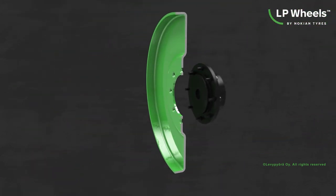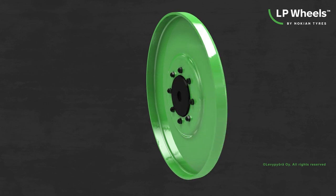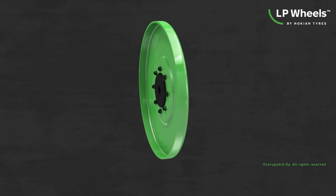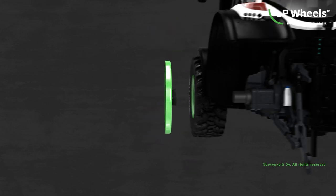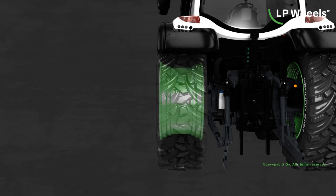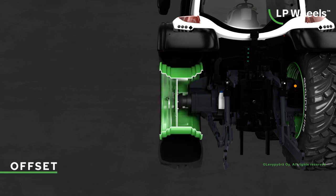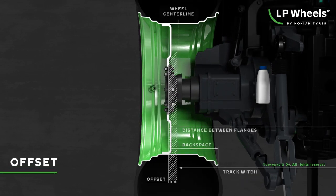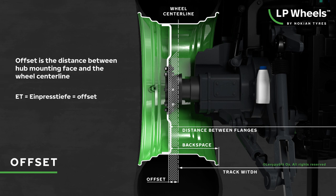To ensure the wheel fits perfectly to the machine and to achieve the desired track width, it is important to understand the concept of offset. Offset, also known as ET measurement, is the distance between the hub mounting face and the wheel centerline.